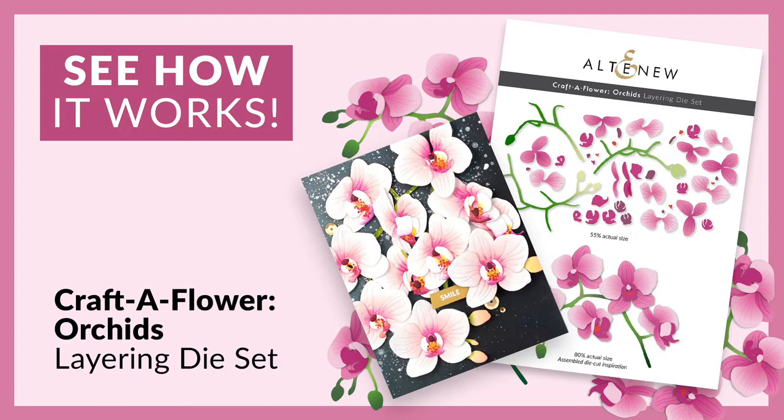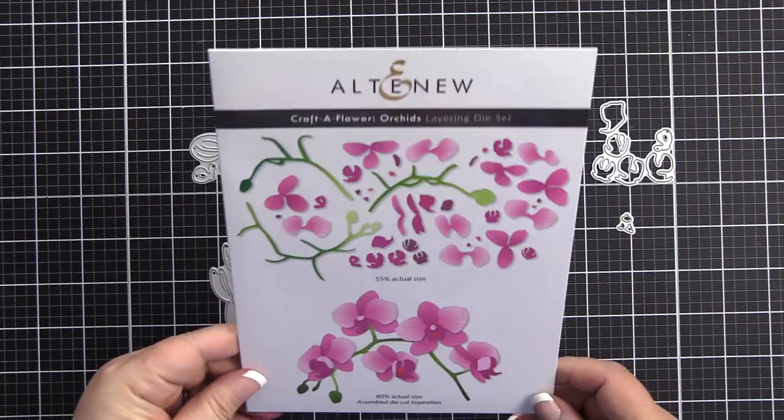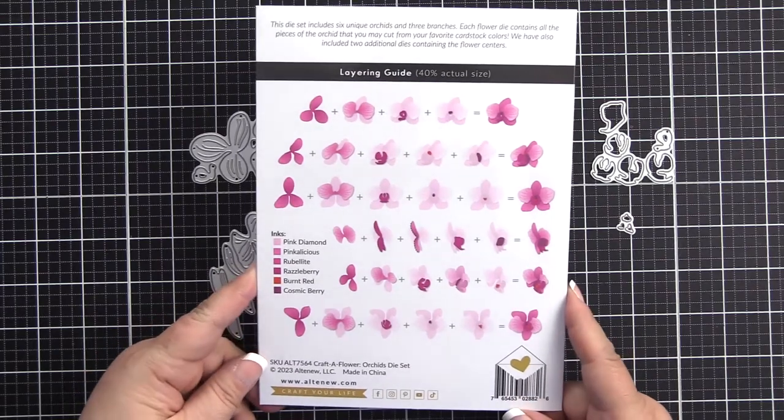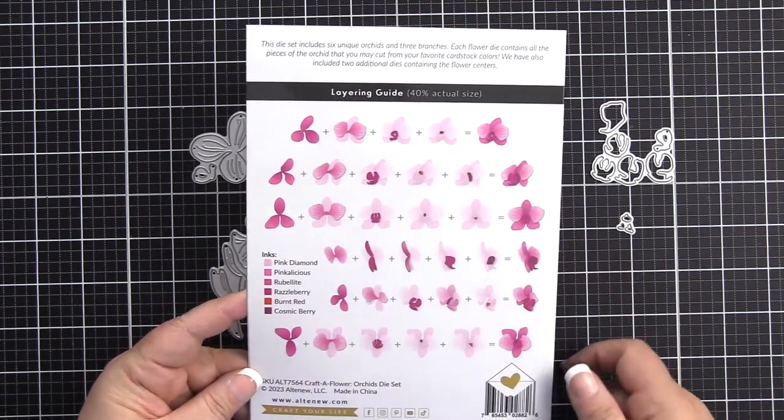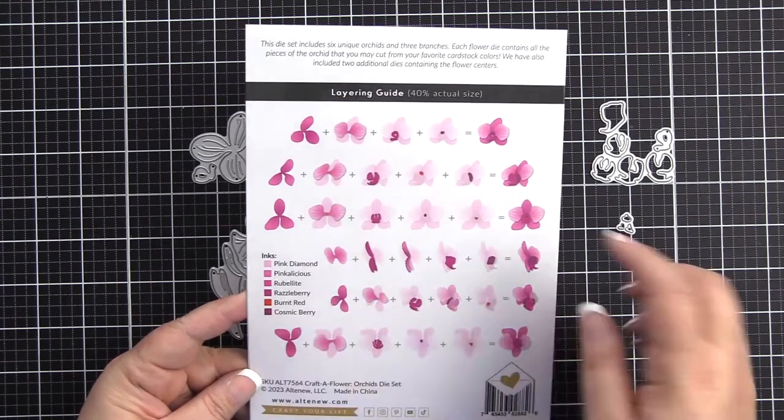This 11-piece die set creates six unique orchids as well as three branches. Here's an image of a project you could possibly create. On the back you'll see the layering guide which shows step by step how to create each of the six orchids, as well as the ink colors used to create the project example shown.